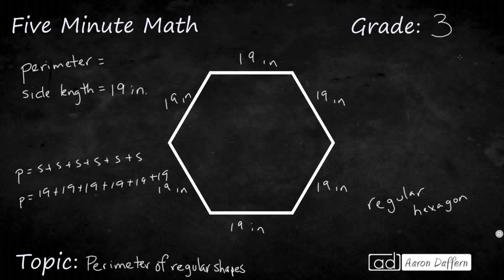But in third grade, we've been working on two-by-one multiplication. We could also look at it as perimeter equals six times the side, or six times 19. You can show multiplication by just having six and then a parenthesis with the number inside. So it's 19 times 6, and that's going to be 114. So the perimeter is 114 inches.